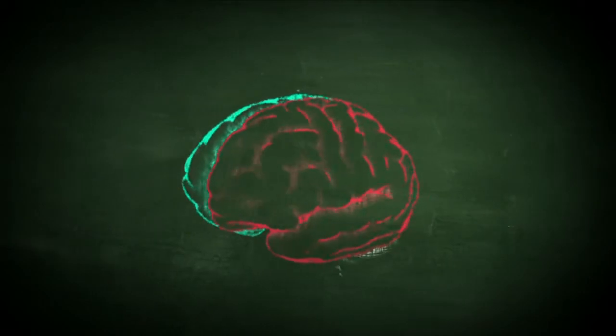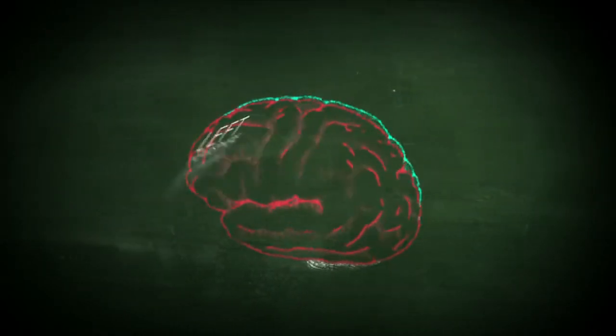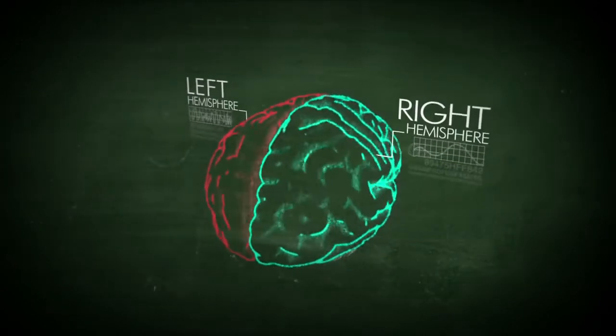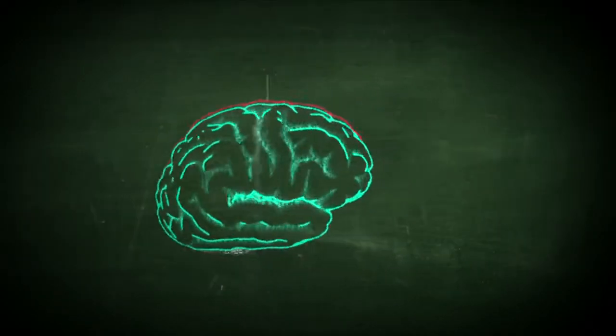This is our brain, divided into two hemispheres, the left and the right. Each side processes reality in a different way. The left side thinks in words and the right hemisphere thinks in images.